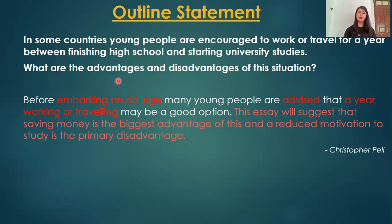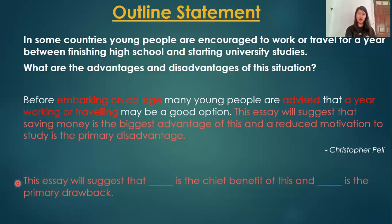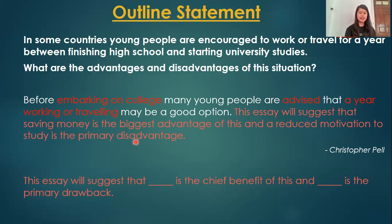The outline statement is: 'This essay will suggest that saving money is the biggest advantage of this, and a reduced motivation to study is a primary disadvantage.' The outline statement simply answers the question generally — you don't need to provide details or support yet, just outline what you'll write in the body paragraphs. An alternative version paraphrases 'biggest advantage' as 'benefit' or 'positive aspect' or 'pro,' and 'disadvantage' as 'drawback' — different words but the same meaning.